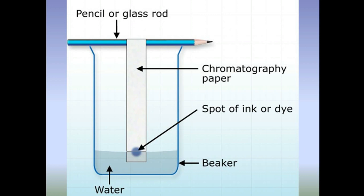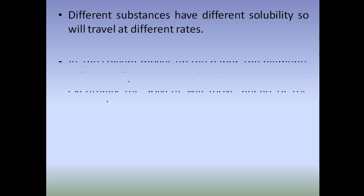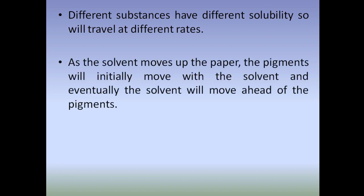This is how the chromatogram should look: the paper is attached to the pencil, there is a pencil line in the middle, the sample dot is on the middle line, and the line is above the solvent line. Different substances have different solubilities and will travel at different rates. For example, mud and salt do not have the same solubility in water, so salt will dissolve faster than mud.